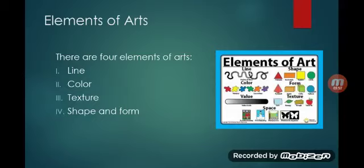Now, we will start each element and its importance in selection of clothing. There are four elements of art: line, color, texture, shape and form. Each element has its own unique and individual expression in clothing.